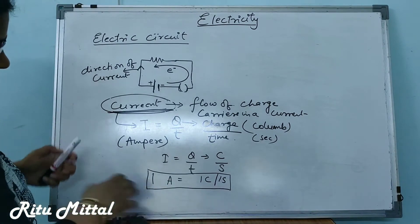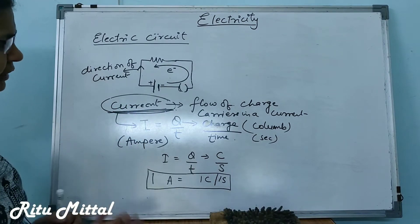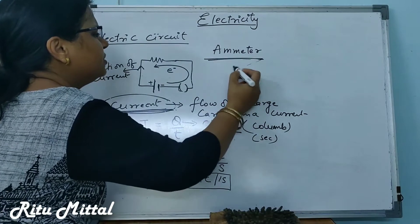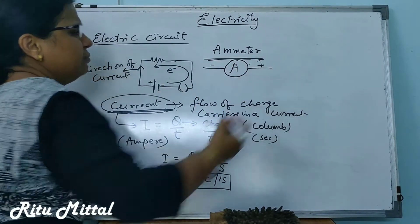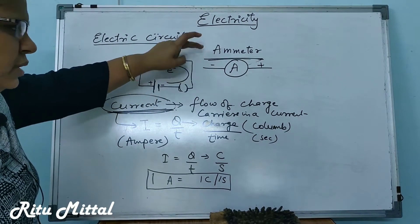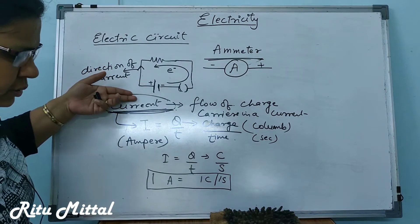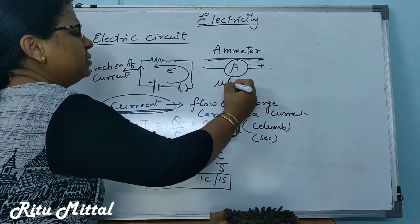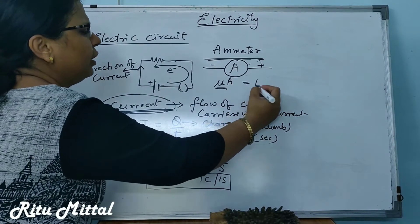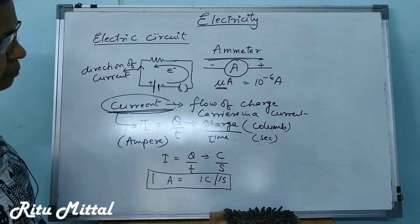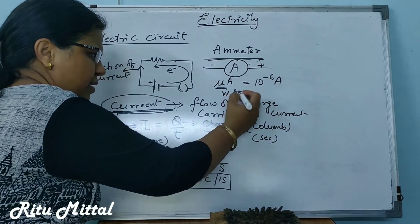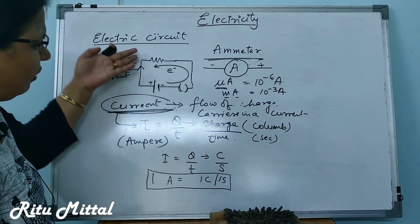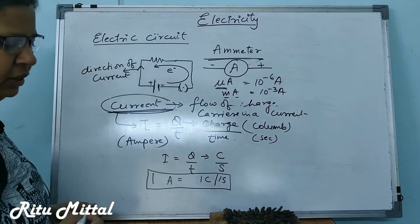Next — how can the current be measured? To measure current in a circuit, we have an instrument called an ammeter, represented as A with plus and minus in a circuit. This instrument is used to measure current. Generally, the current in a circuit is of very low value, so it can be measured either in micro amperes (10⁻⁶ A) or milli amperes (10⁻³ A).